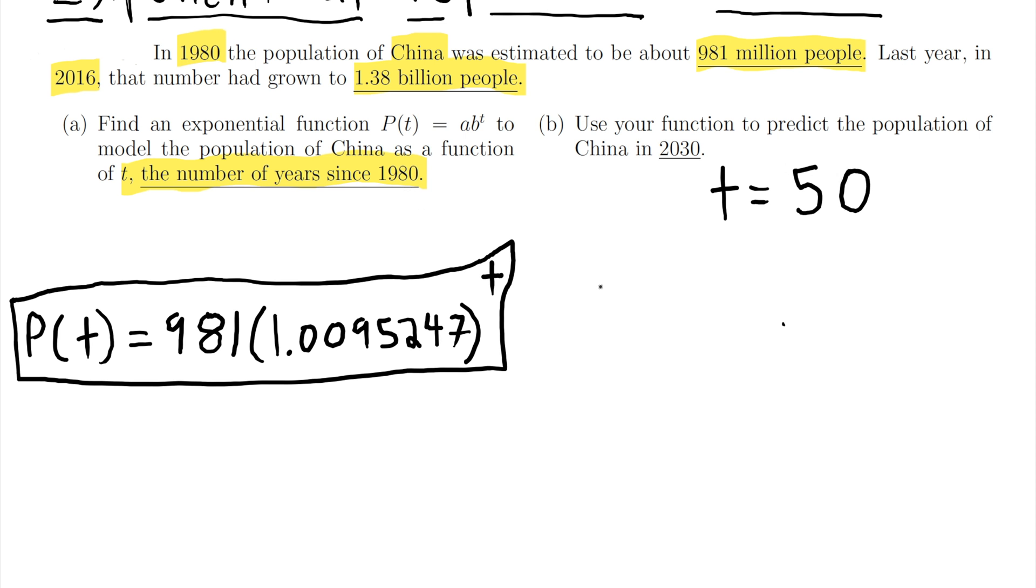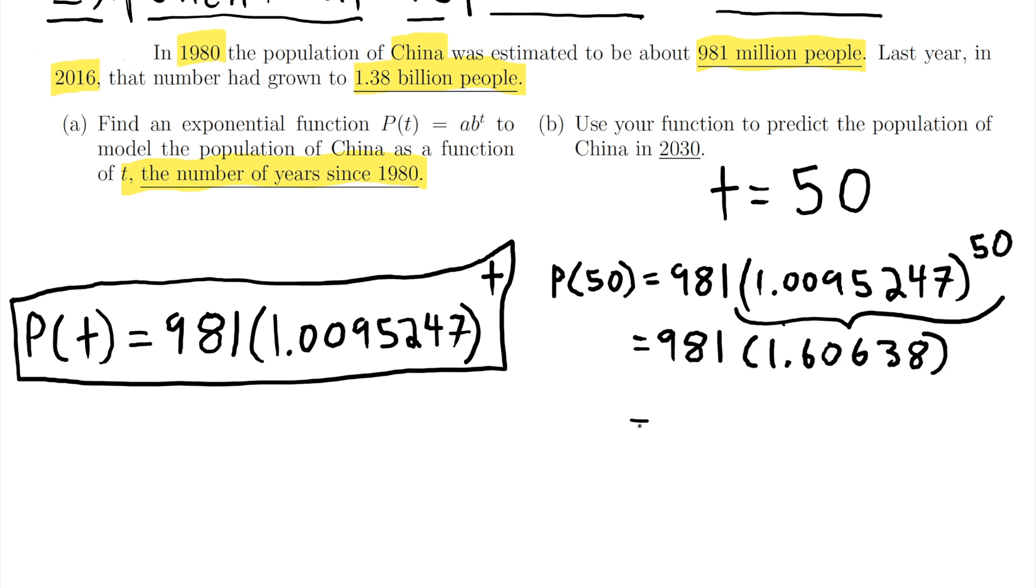So what we're going to do is we're going to take our function and we're going to plug in 50 for the time. So in a situation like this you need to do the exponent first and now lastly I just need to multiply that by my starting amount and I get my answer. That is in millions of people.